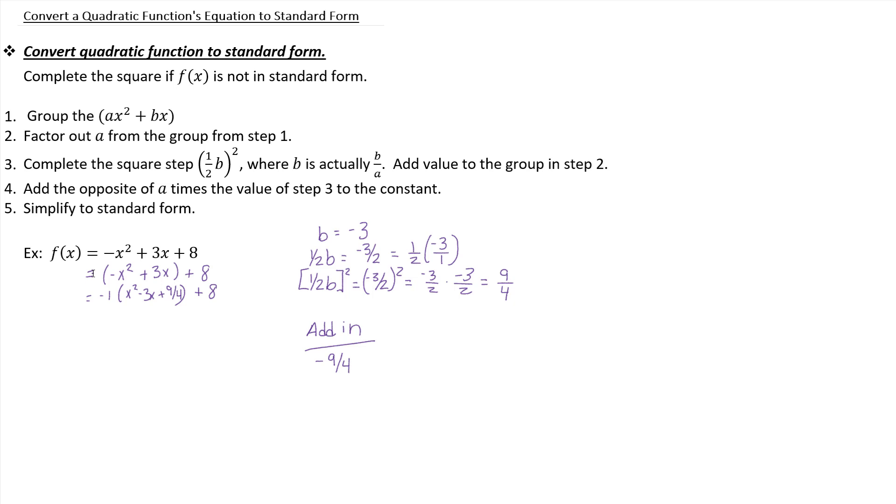Well, that means that this equation is no longer what you started with. To undo that, we need to add in the opposite. So who's the opposite of a negative 9 fourths? Who's its additive inverse? Well, it's positive 9 fourths.